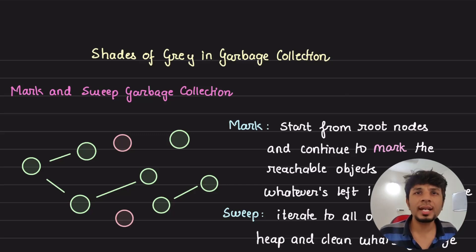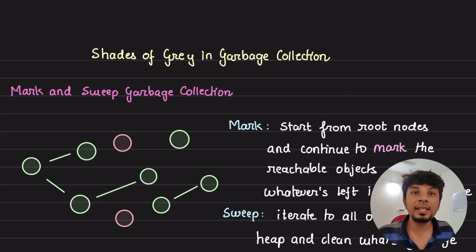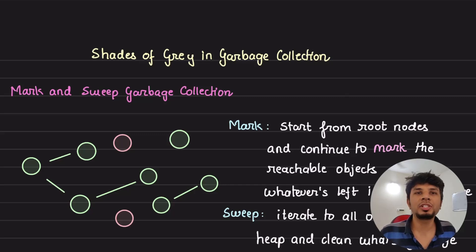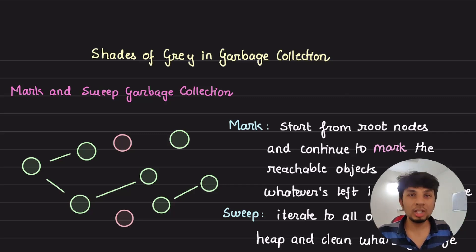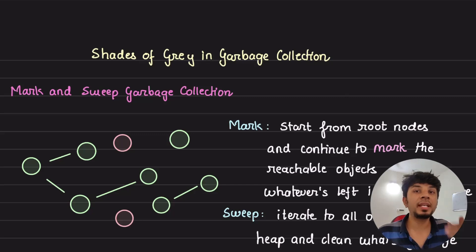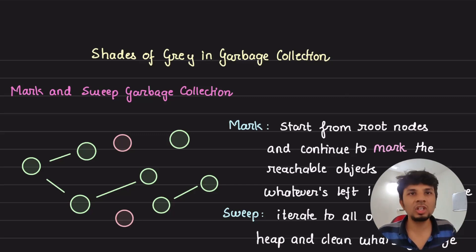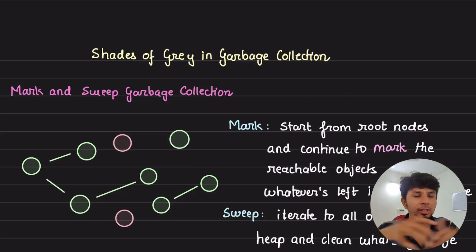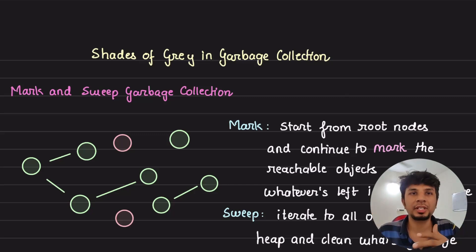In the previous video we took a look at a very simple mark and sweep garbage collector. The approach was a simple depth-first search traversal with two distinct phases: mark and sweep. The algorithm required us to pause the program so that we can run garbage collection. This is called stop-the-world garbage collection, in which a program literally pauses and does nothing but garbage collection.